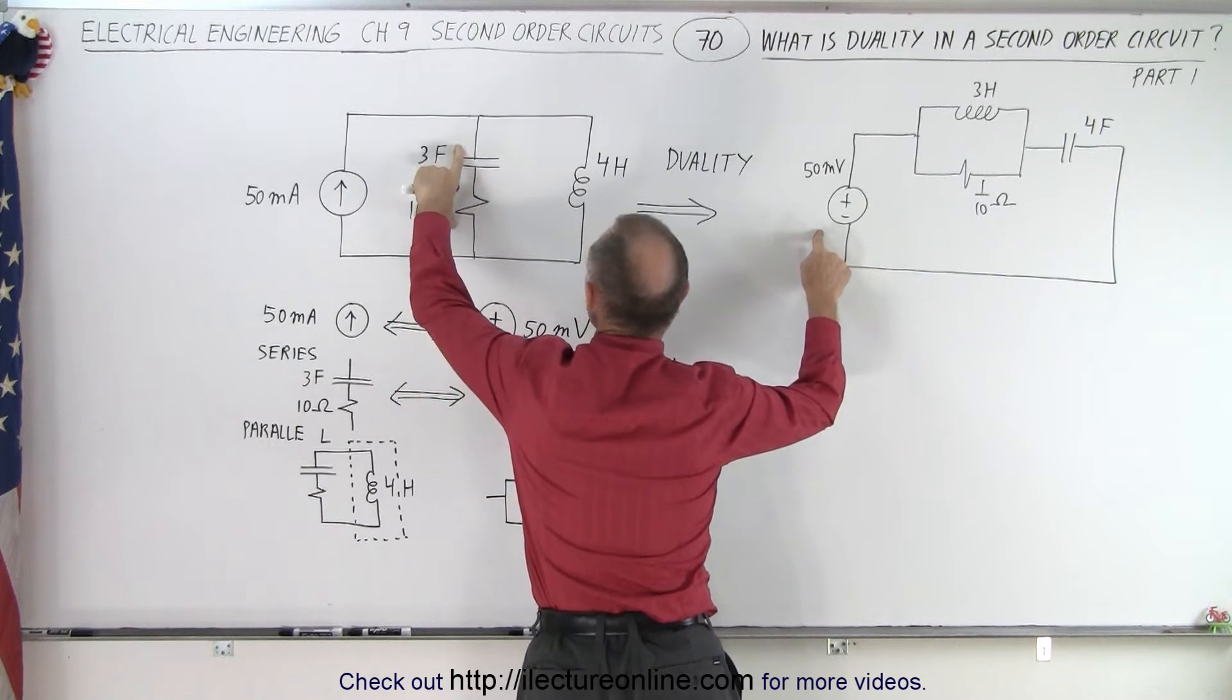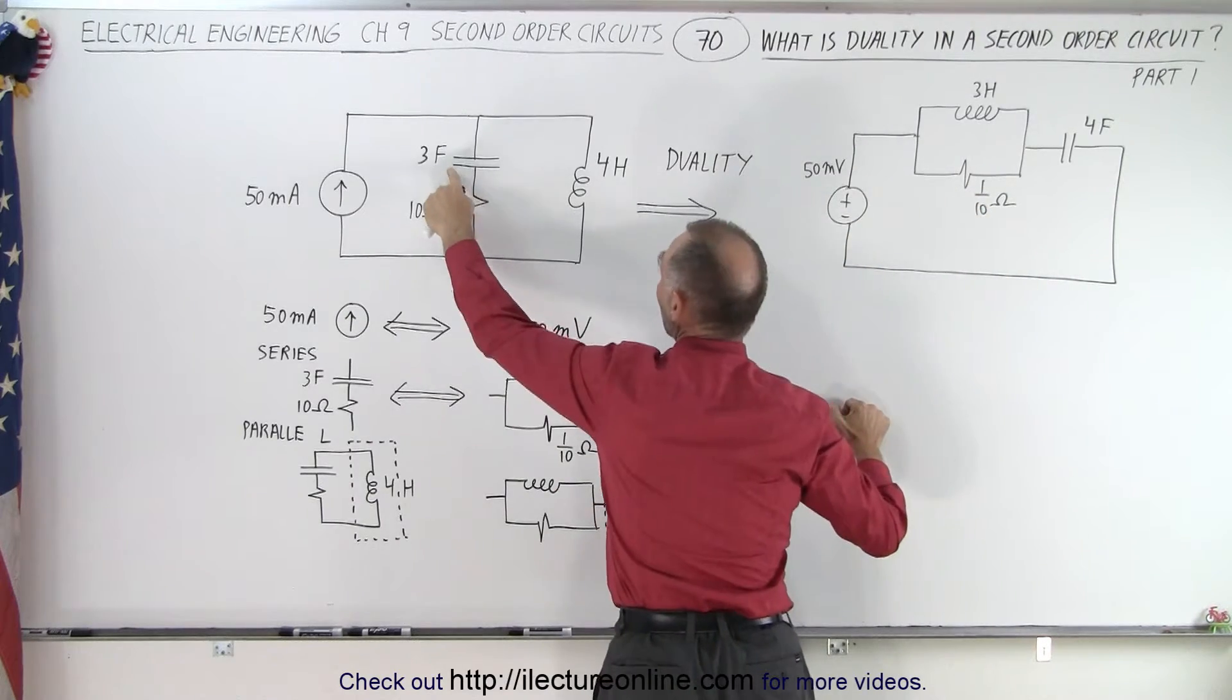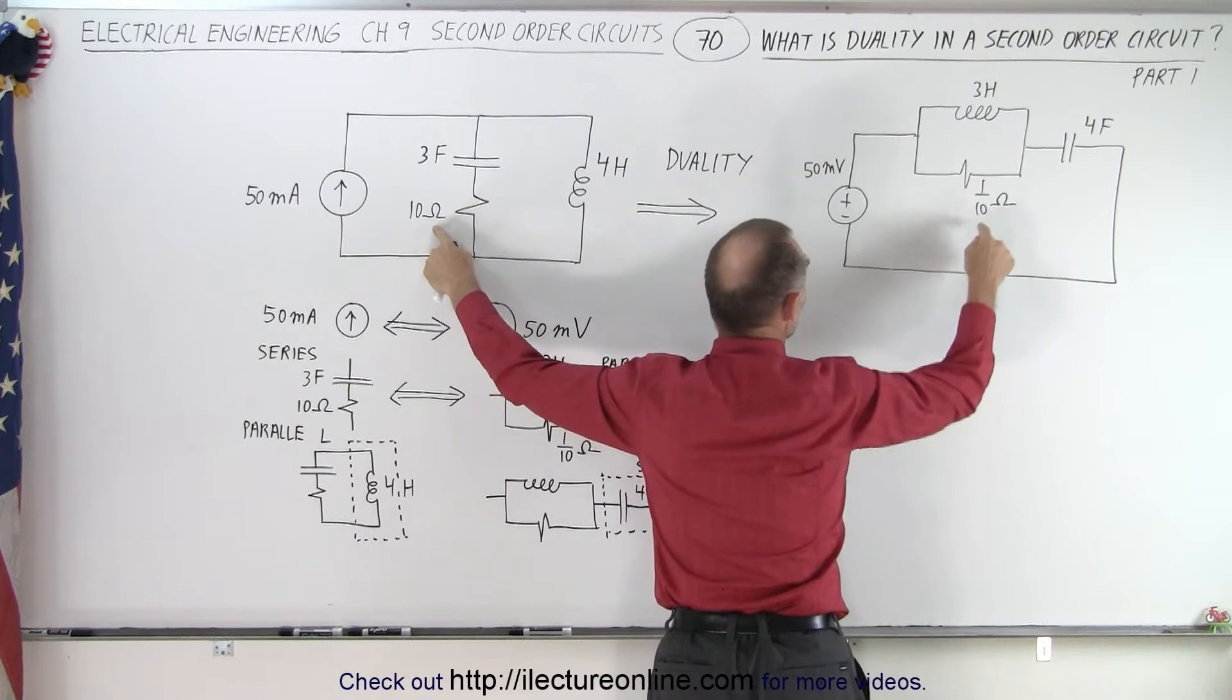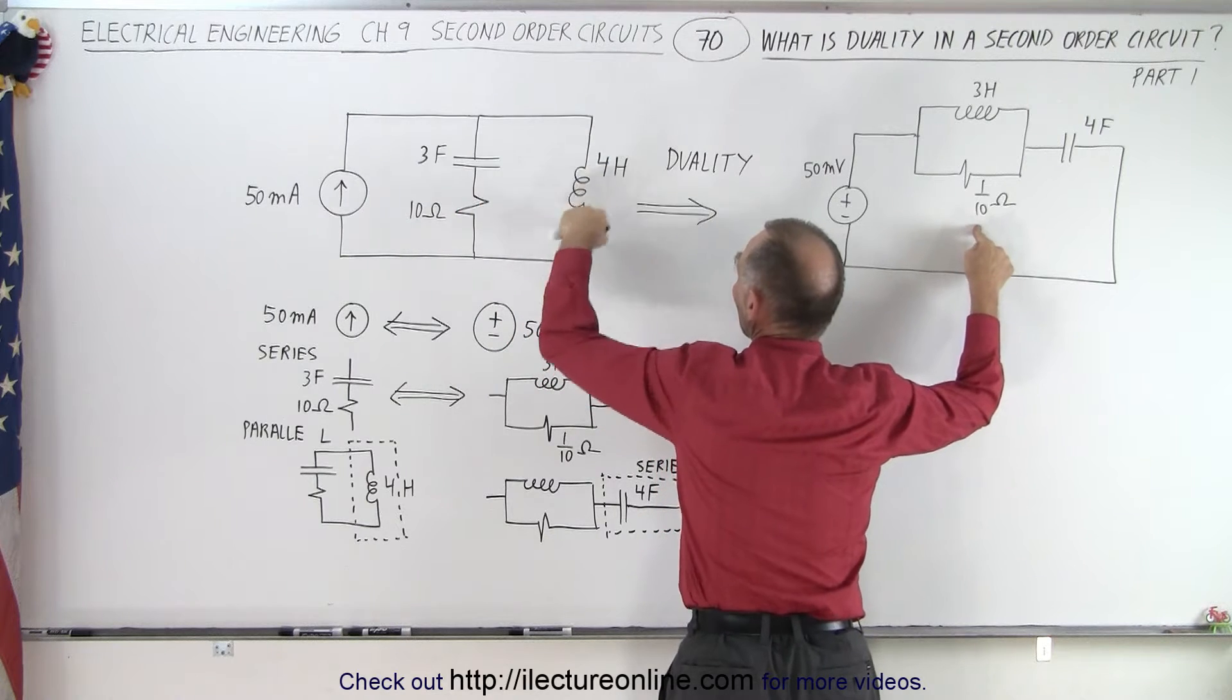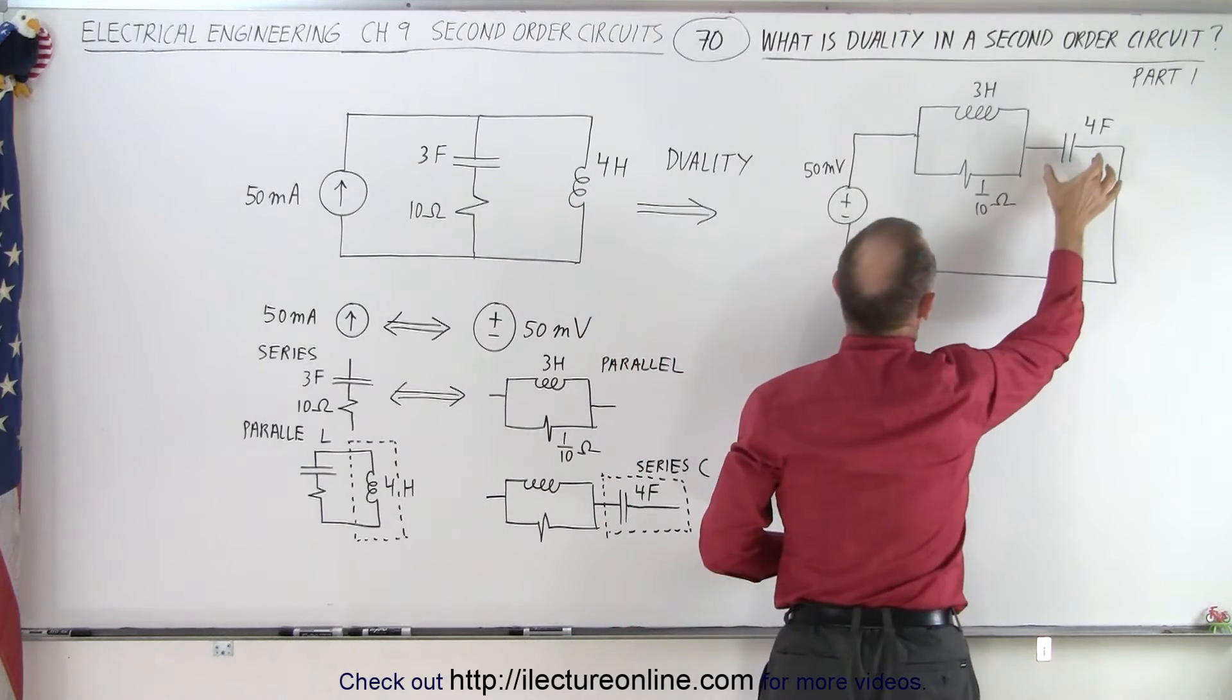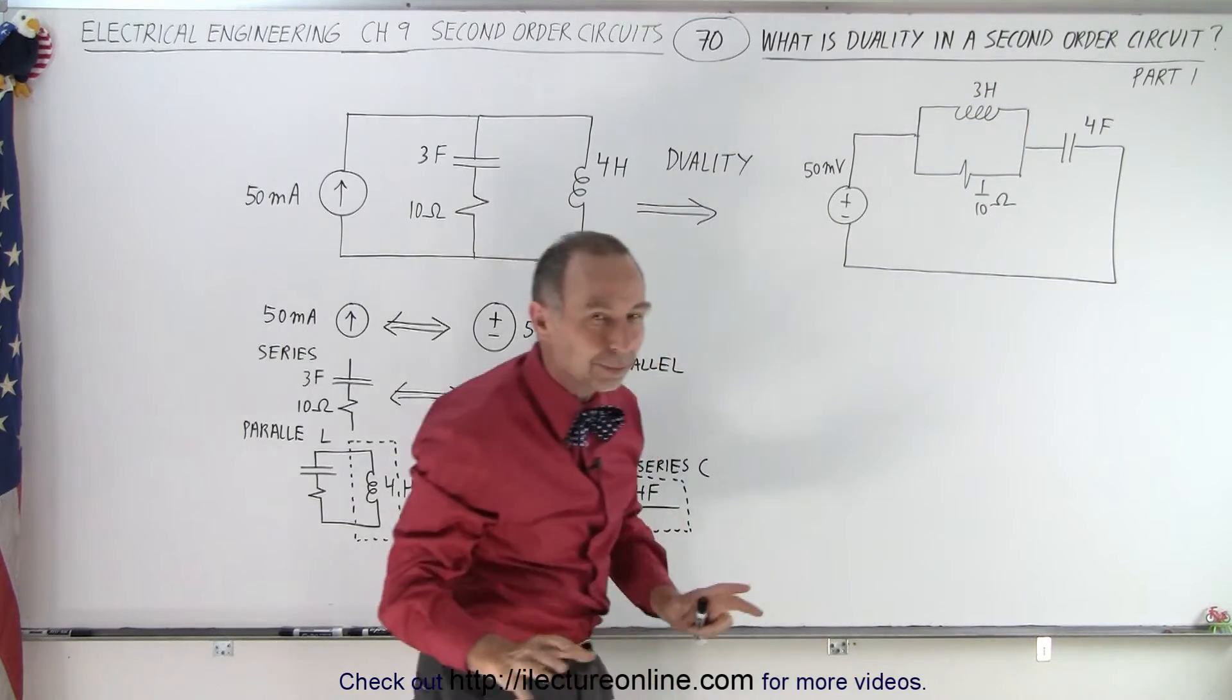We change the series connection here with the capacitor and the resistor into a parallel connection, but we change the capacitor to an inductor from 3 farads to 3 henries, and the resistor goes from 10 ohms to the inverse of that, or one-tenth of an ohm. And then we have this inductor in parallel to this set of components here. And now we make it a capacitor but we put it in series with the two components here. And then we continue the circuit and complete it.